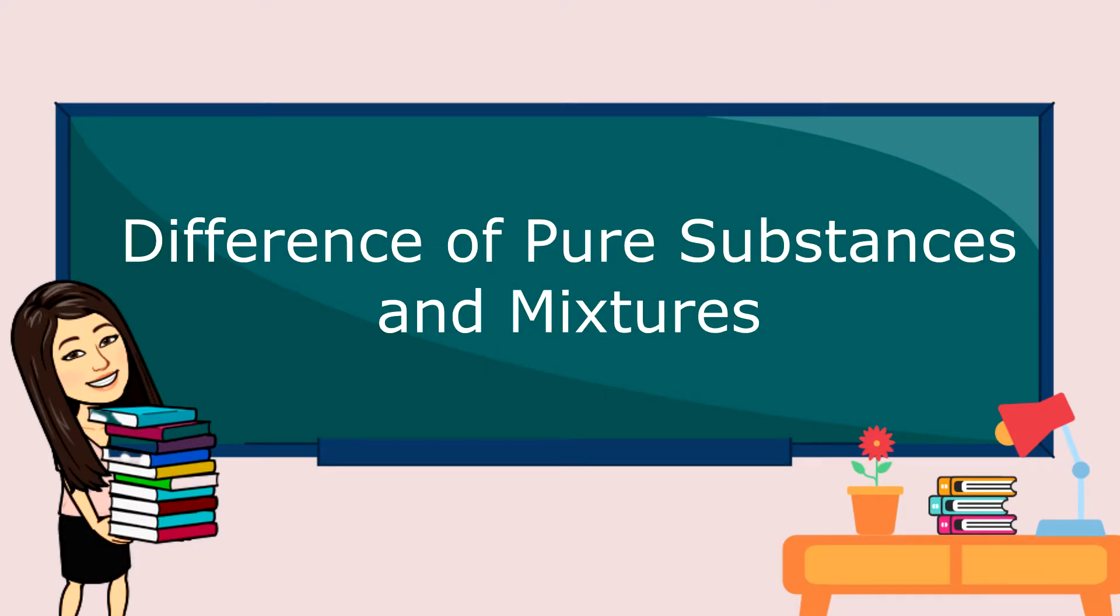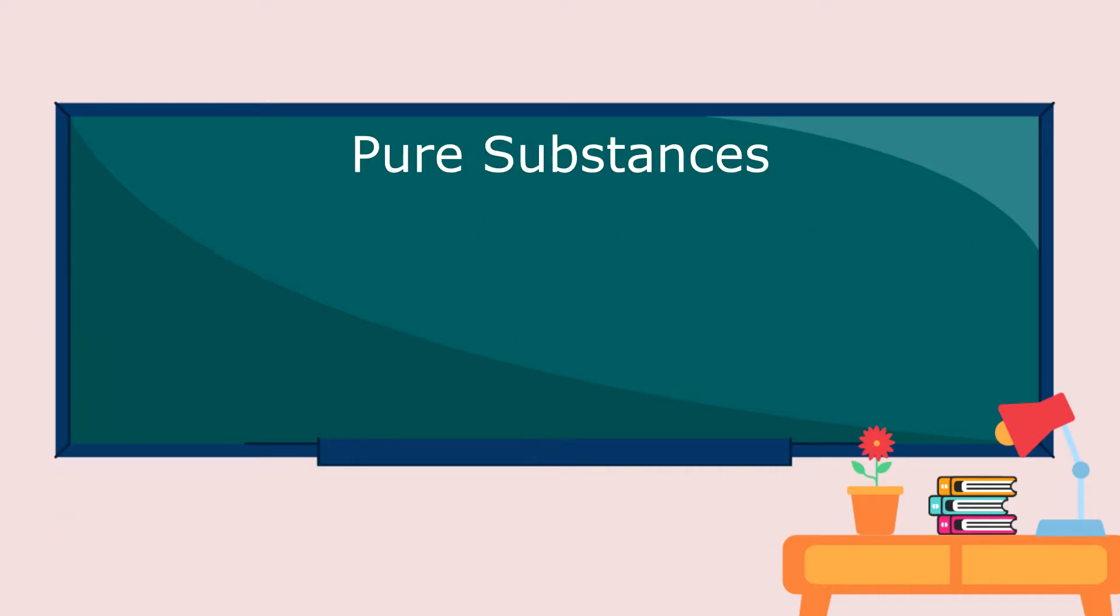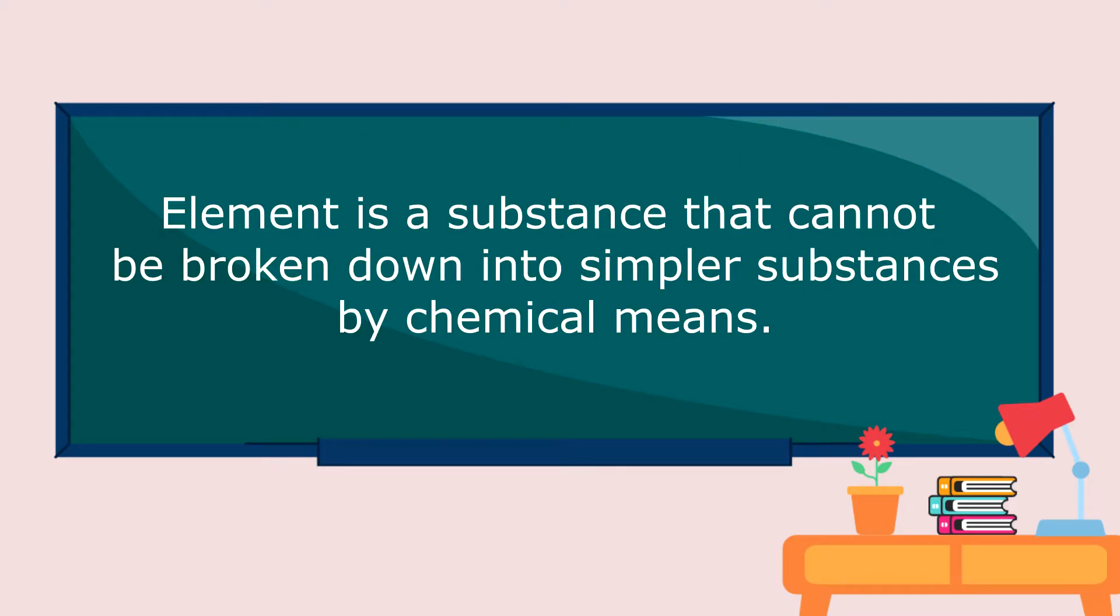So now, let's have the difference of pure substances and mixtures. Pure substances can either be an element or a compound. Element is a substance that cannot be broken down into simpler substances by chemical means.